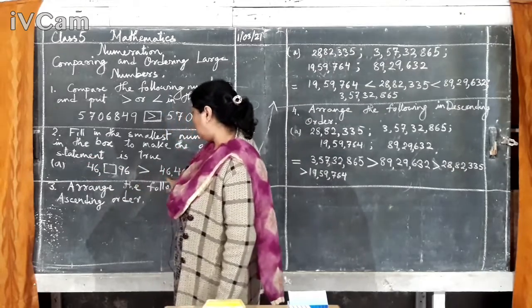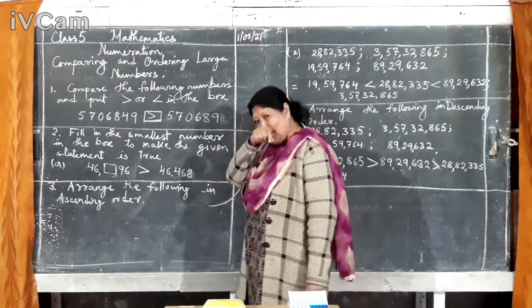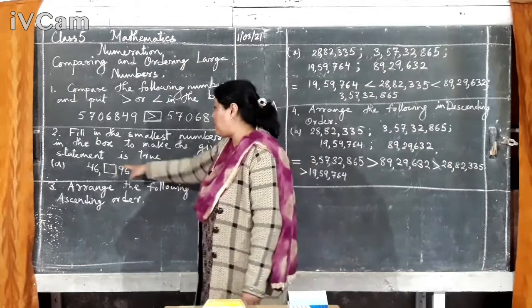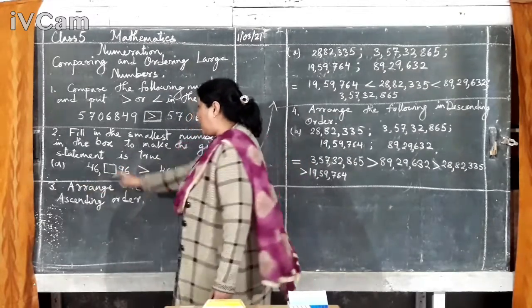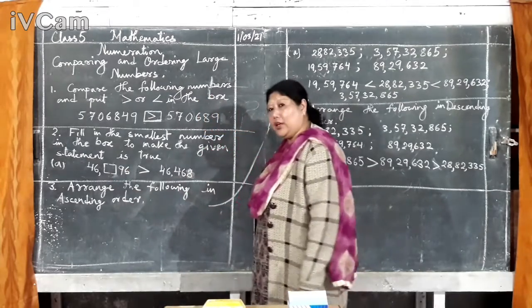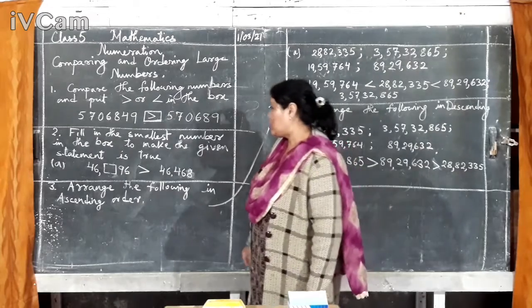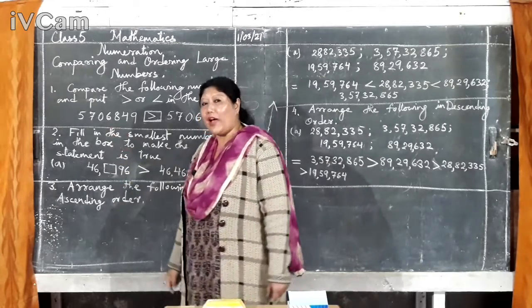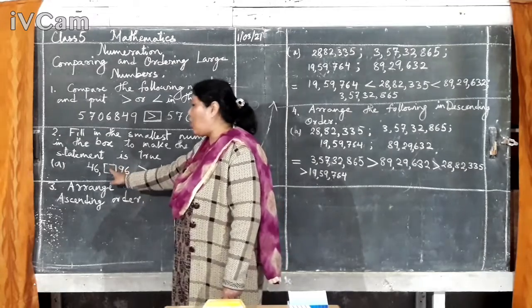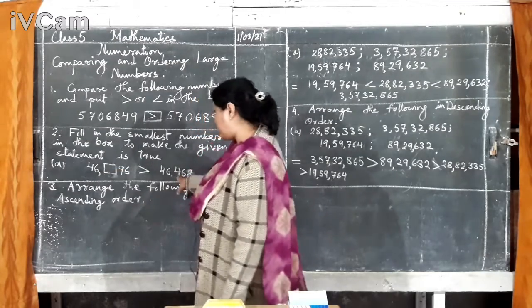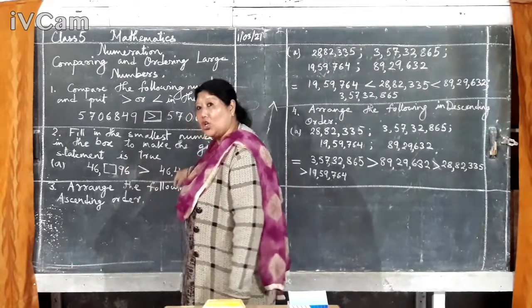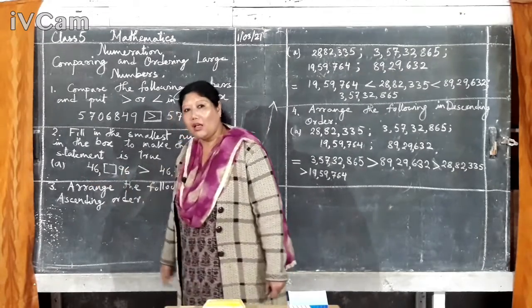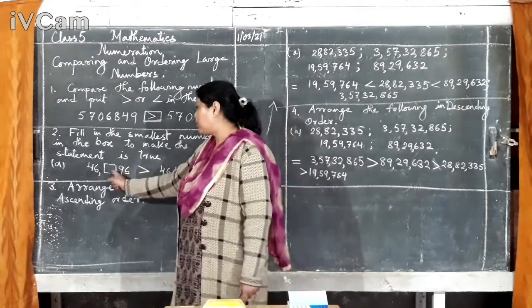Like, in 100 space, here, here, here, here, 4. And in this case, if you put 4, it will be 46,496. Here, 468. So, this one is bigger. So, you can put 4 also. Or, if you want to put 5, you can put 5 also. So, just that, this number should be bigger.